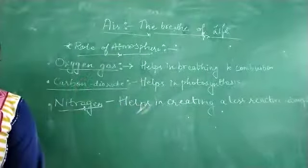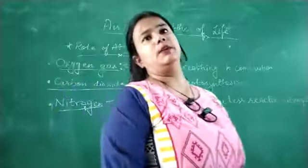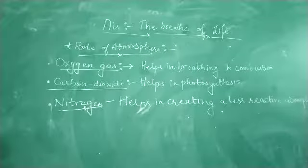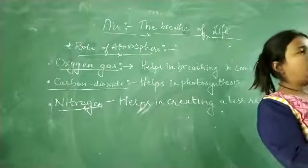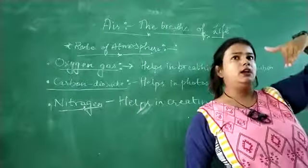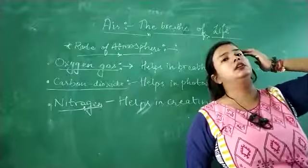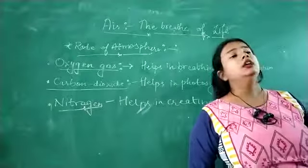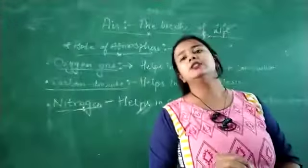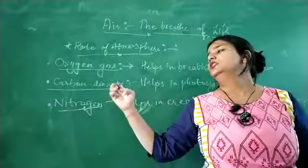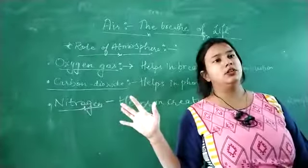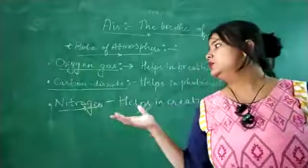CO2 ka ek aur bahut bada work hai - CO2 helps in temperature control. CO2 extra heat ko trap karti hai. Environment mein heat enter hoti hai. Agar CO2 na ho, toh saari heat escape ho jayegi. Some heat is trapped by carbon dioxide. So it can cause some heat to be trapped.